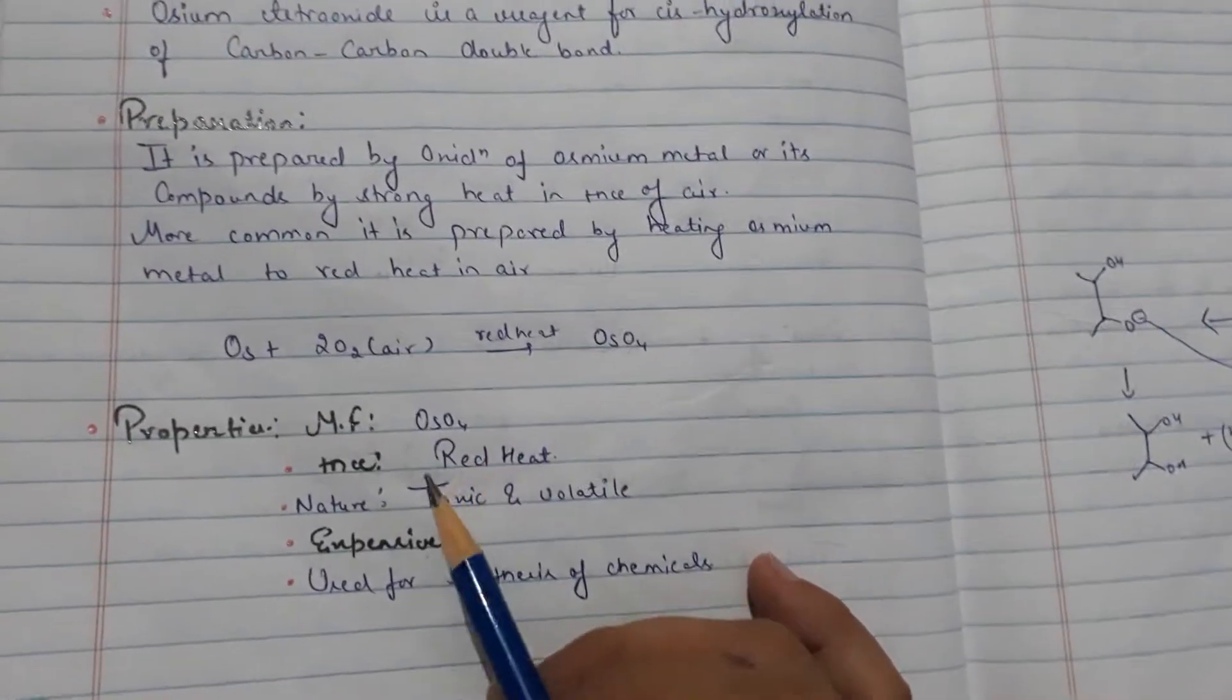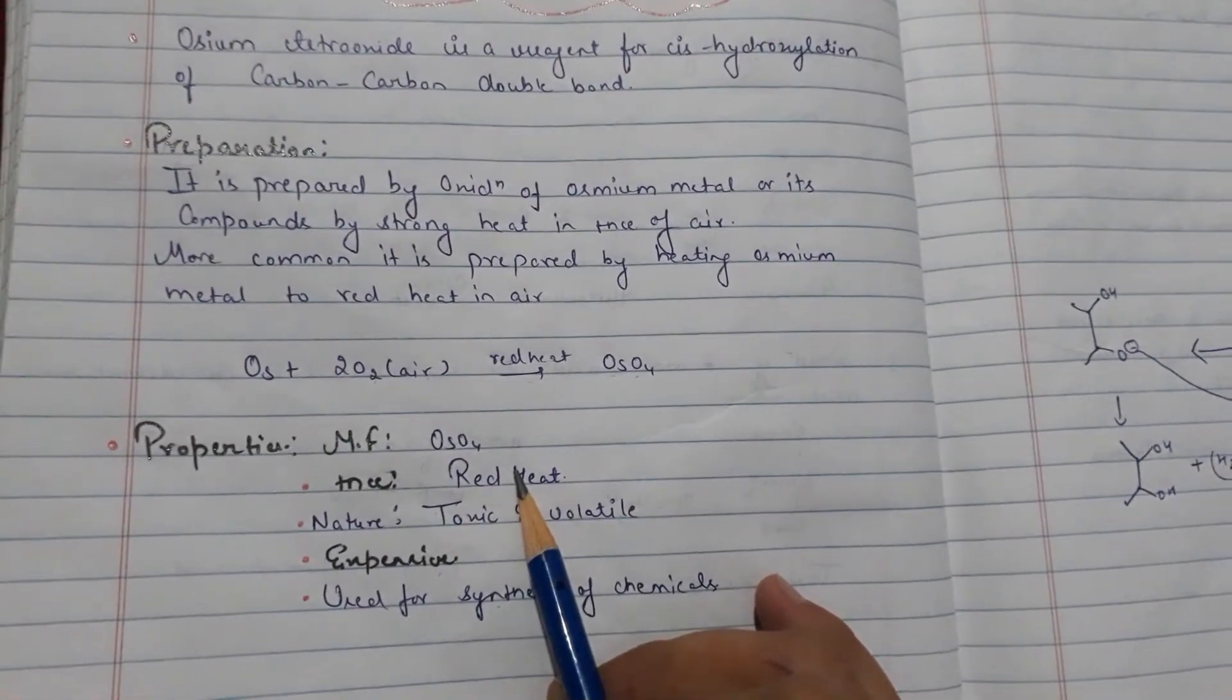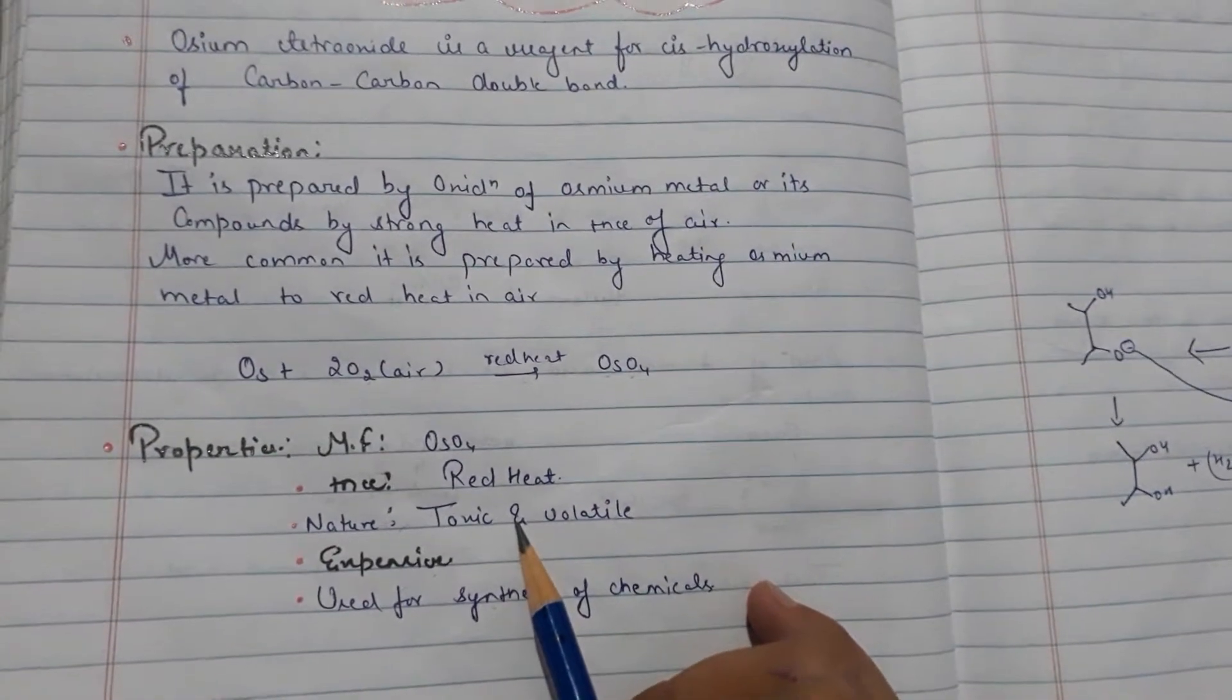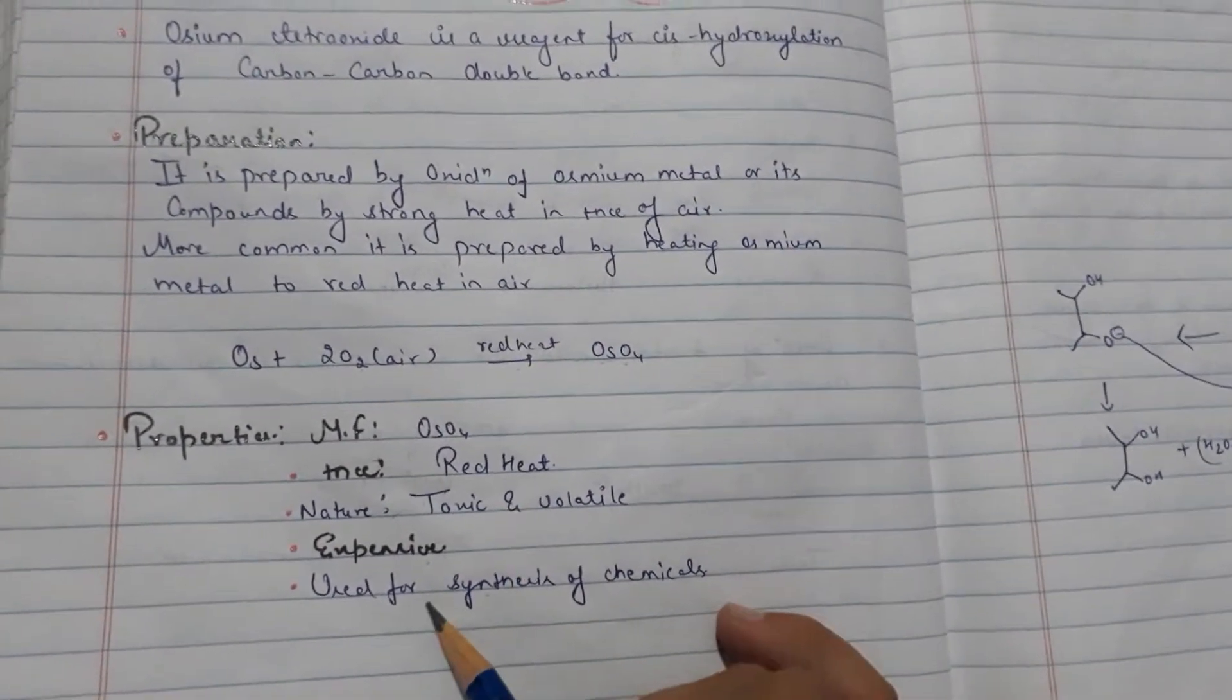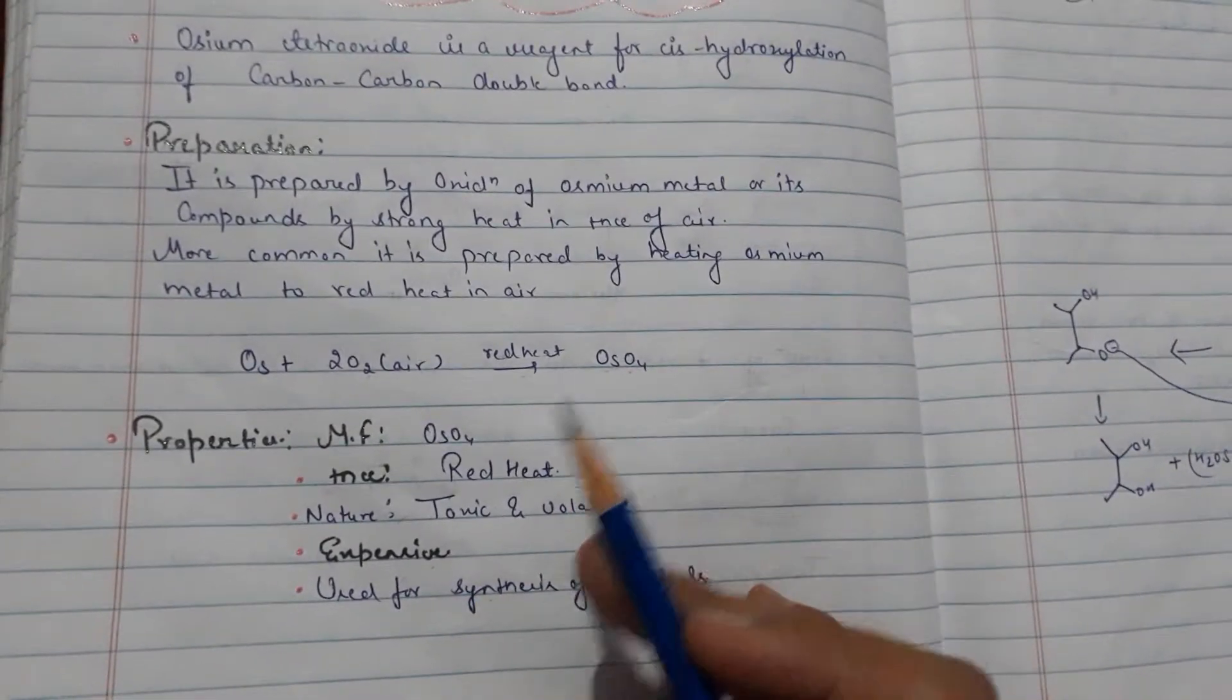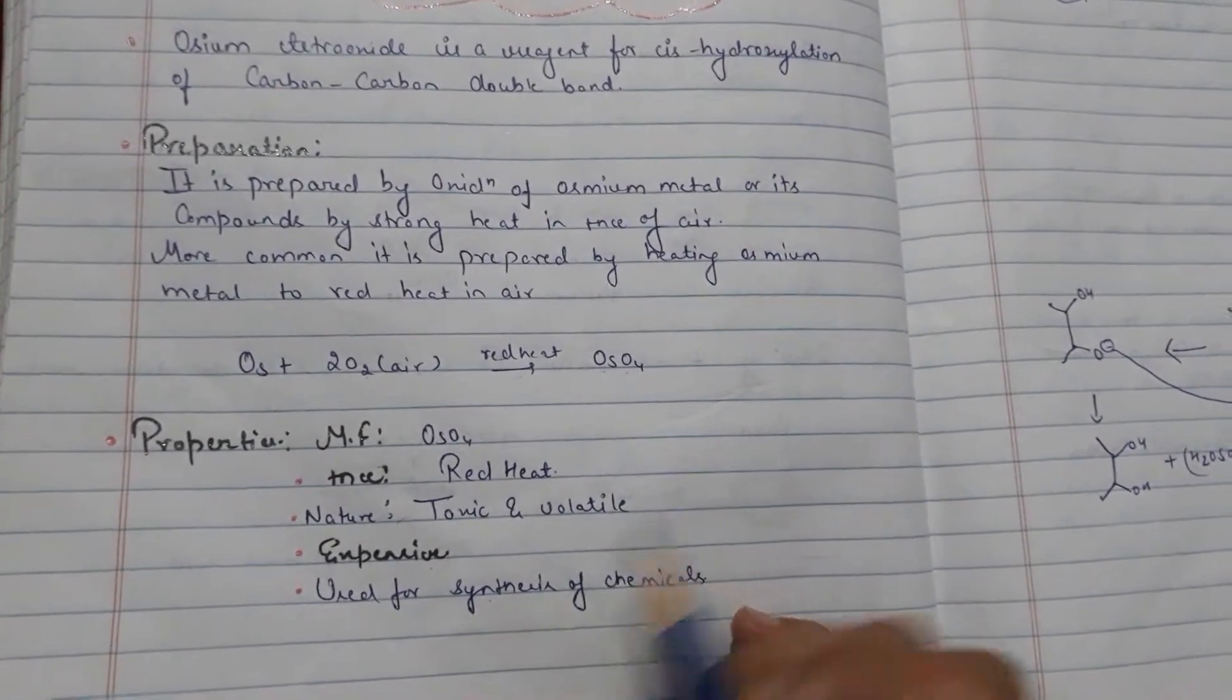This is Osmium Tetraoxide, presence of red heat. Nature will be toxic and volatile, and it is an expensive oxidizing agent used for synthesis of chemicals.